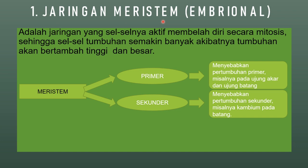Jaringan meristem sering juga disebut dengan jaringan embryonal, yang merupakan jaringan yang sel-selnya aktif membelah diri secara mitosis. Secara mitosis artinya aktif membelah secara berlipat ganda: dari satu sel menjadi dua sel, dua sel menjadi empat sel, empat sel menjadi delapan sel, dan seterusnya. Sehingga sel-sel tumbuhan akan semakin banyak, dan akibatnya tumbuhan akan bertambah tinggi dan bertambah besar.